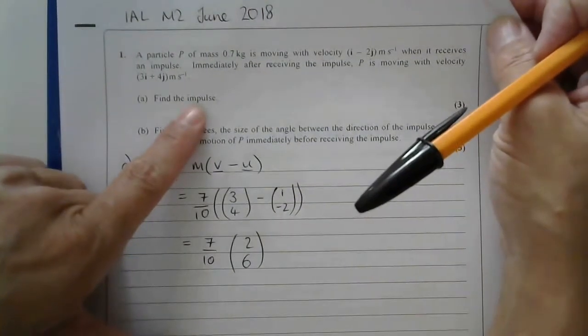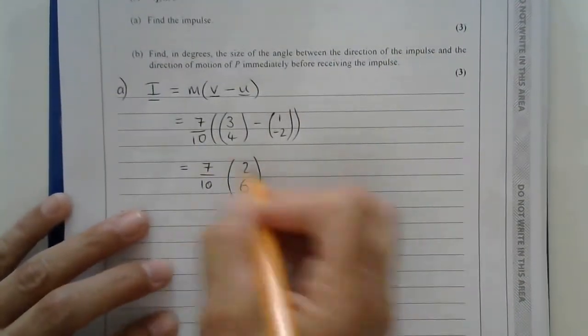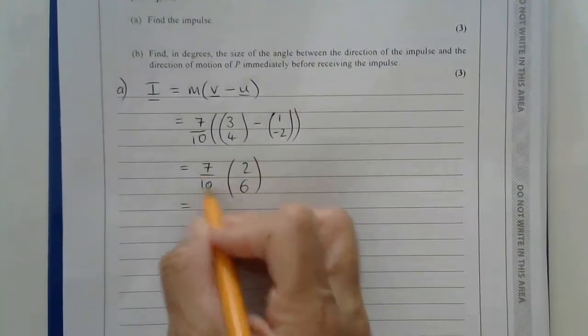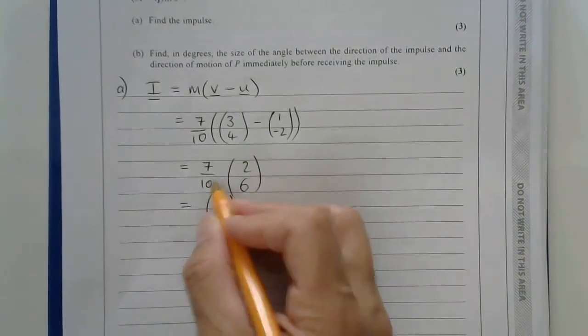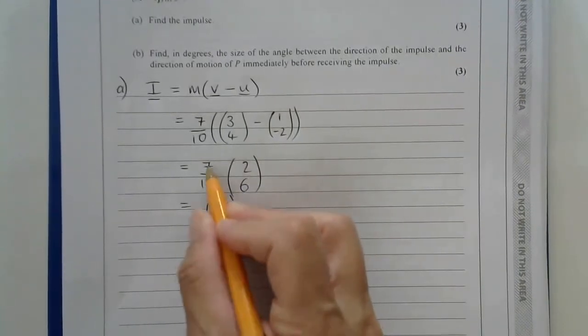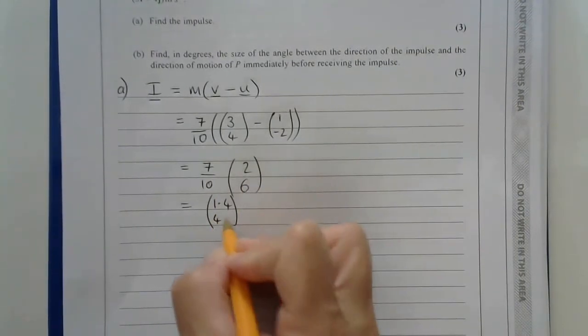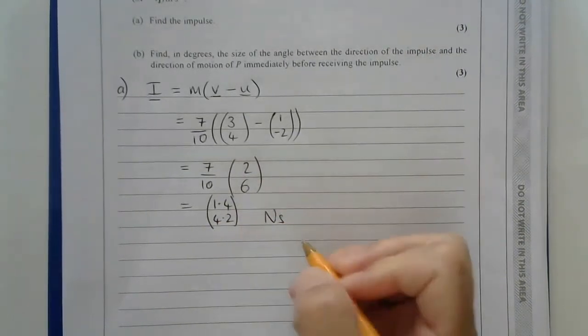Now here they're asking for the impulse rather than the magnitude of the impulse. So I can leave my answer like this or I can multiply this in, but a vector is OK. So basically I'll do 0.7 times 2 and 0.7 times 6, and the impulse is measured in newton seconds.